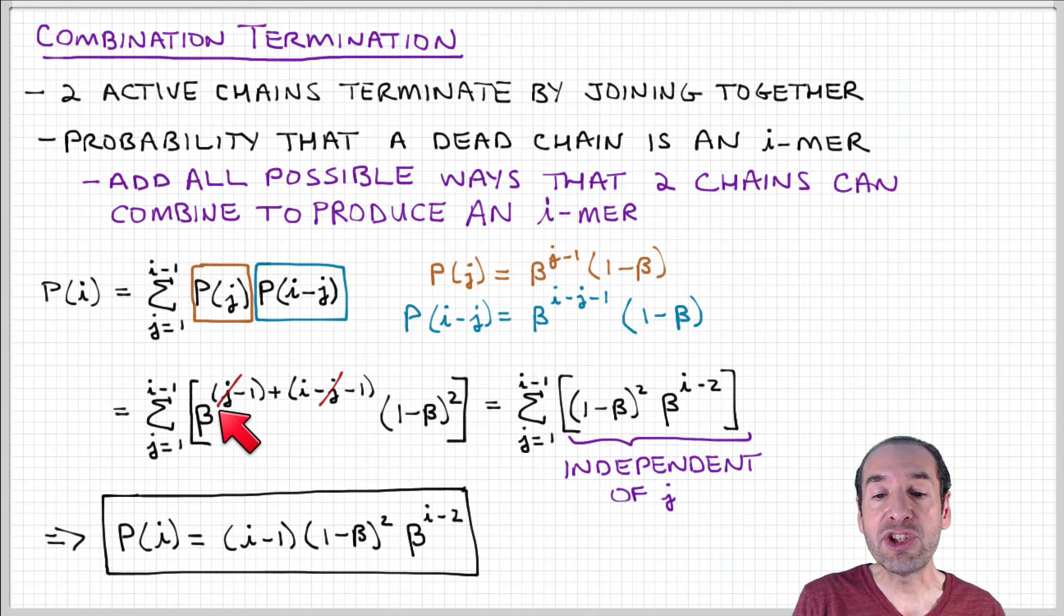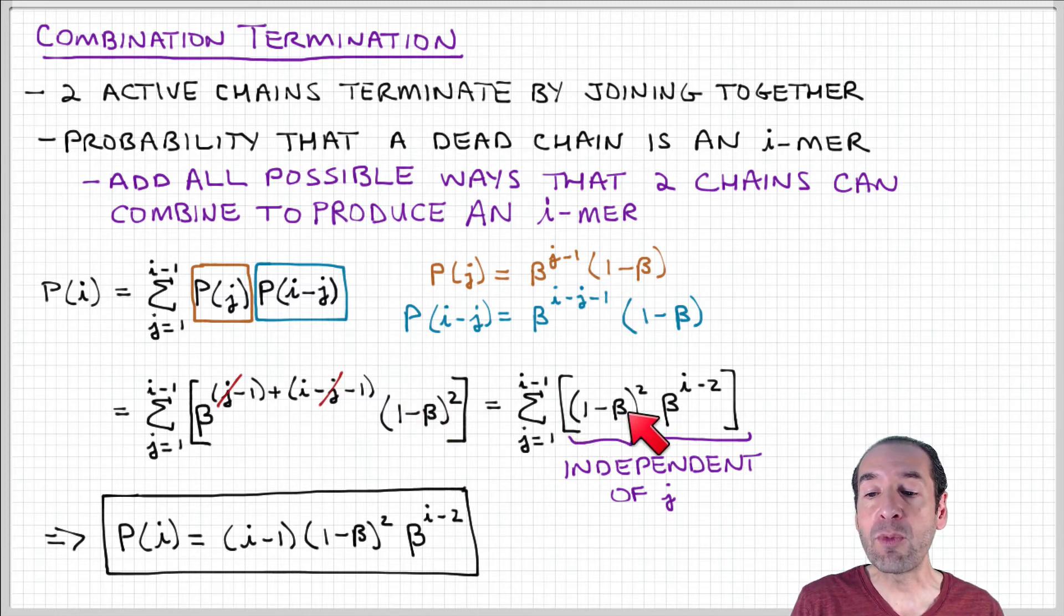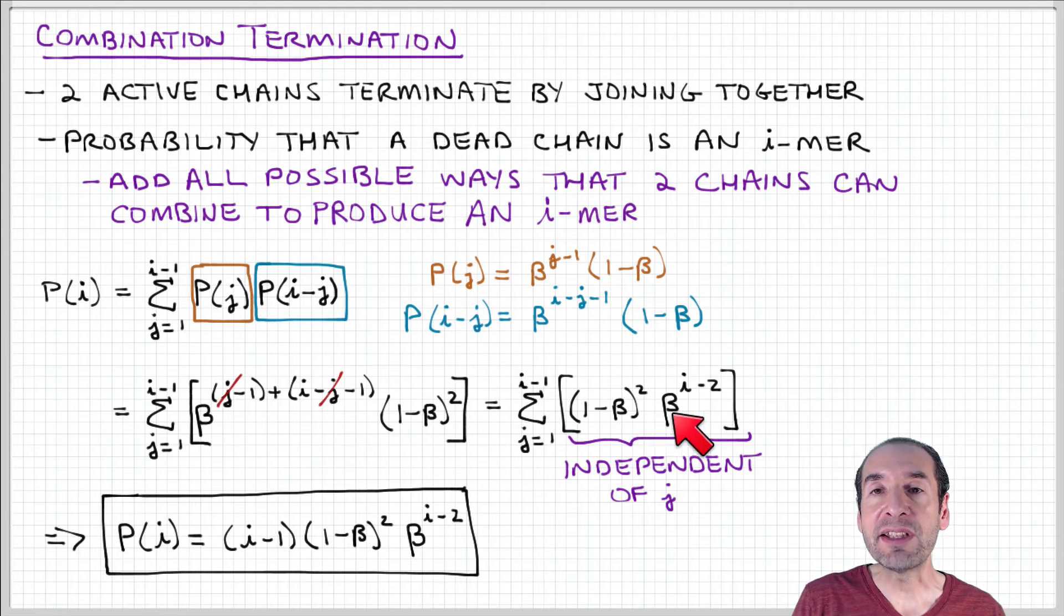And we can see that this beta, this exponent to the term beta, the j's actually cancel out because we have a plus j here and a minus j here, and then we have 1 minus beta squared.